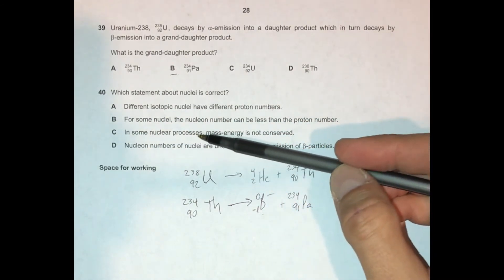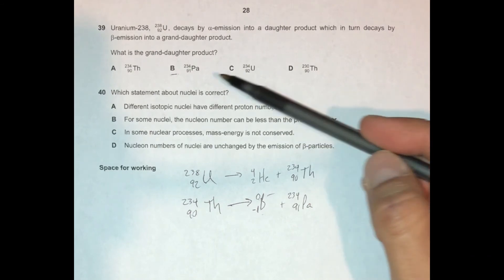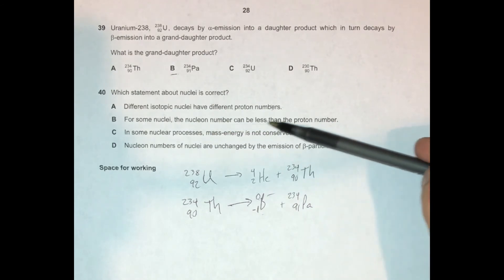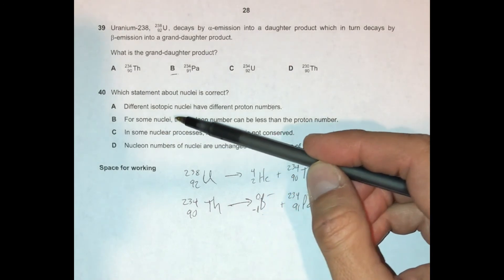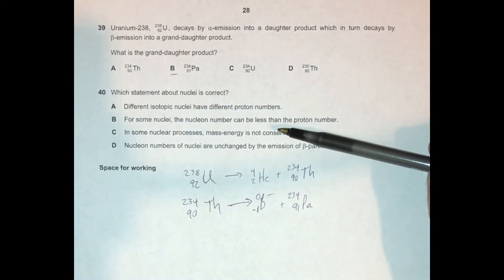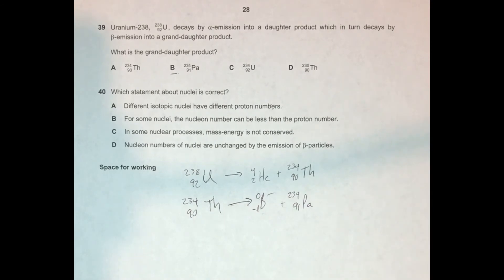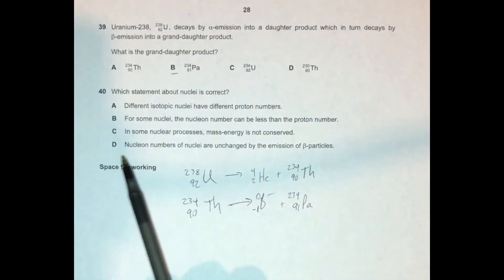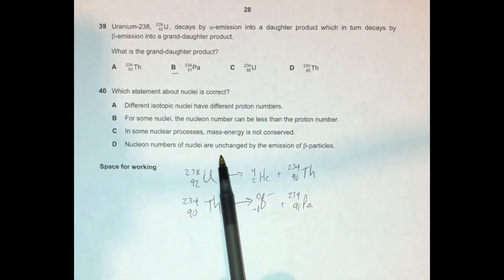It says: in some nuclear processes, mass energy is not conserved. Which statement about nuclei is correct? In some nuclear processes, mass energy is not conserved. Well, as far as we know, that's not true. But I don't think we've - maybe there's nuclear processes that remain undiscovered where we'll find some violation of conservation of mass energy. But I think we always are looking for the best answer here. And so I don't want to confuse you. Let's just eliminate C as an incorrect choice here.